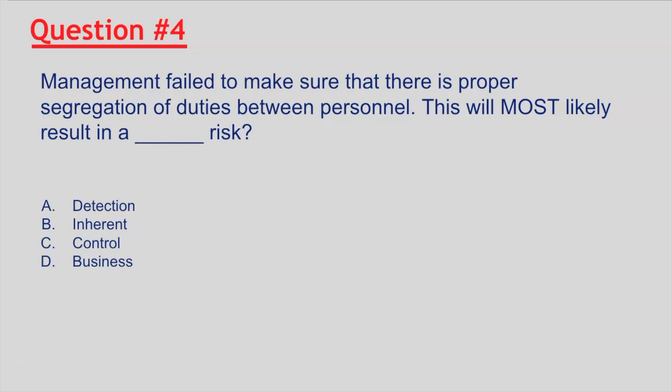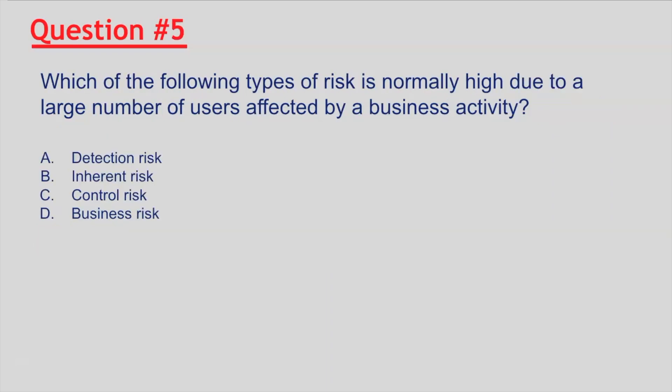Question number four: management failed to make sure there is proper segregation of duties between personnel — this will most likely result in what type of risk? If you selected C, you are correct. Management failed to implement the correct control, therefore this is most likely a control risk.